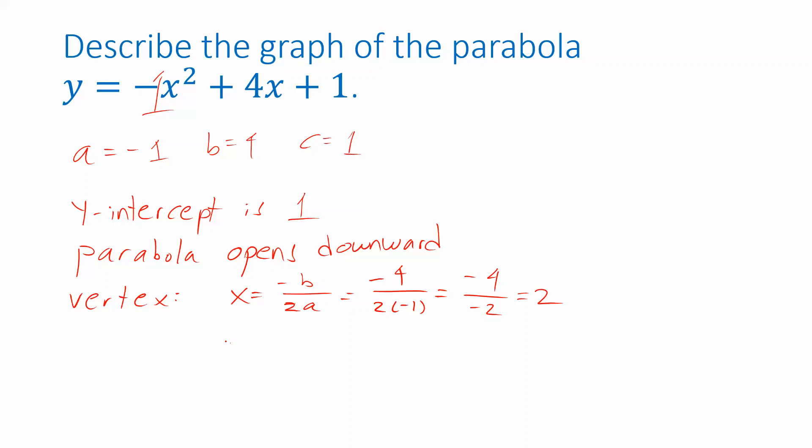We actually don't have to stop there. We can also find the y-coordinate of the vertex once we know the x-coordinate, because all we have to do is take that x-coordinate and plug it back into the equation of the parabola. So in that case, we'll be replacing the x's with 2. -2², well, you square the 2 first, so you get 2² is 4, -4. 4 times 2 is 8. -4 + 8 + 1 works out to positive 5.